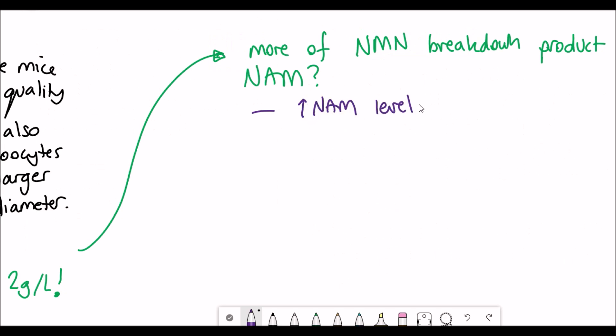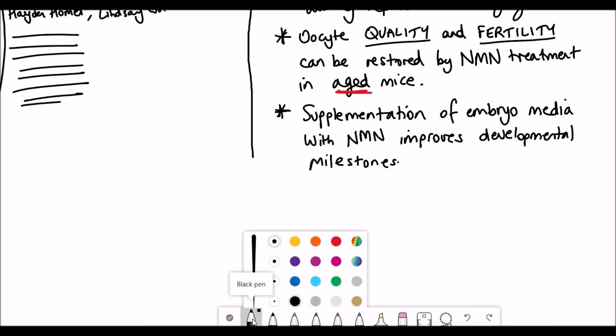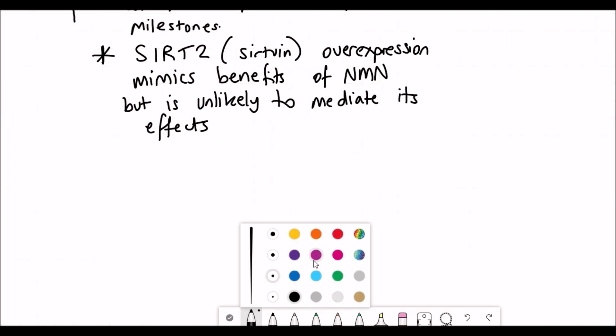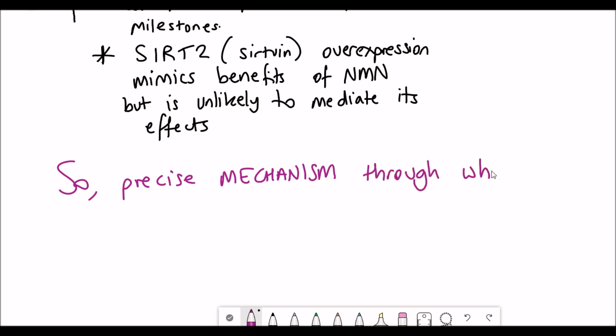To recap: this paper has shown that declining levels of NADH is associated with oocyte dysfunction during reproductive aging, and that oocyte quality and fertility could be restored when older mice were treated with NMN. They also show that if you supplement the embryo media post-fertilization with NMN, it improved the development of early embryos.